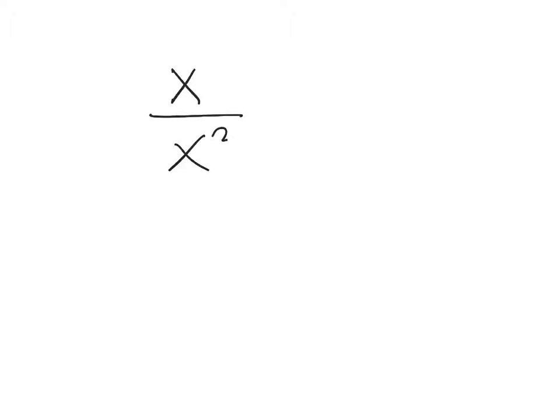Now let's look at some fractions with variables. I inserted two slides to show examples of simplifying fractions with variables before we get into polynomials. My first example is x over x squared. You can factor x squared and break it apart — x times x is x squared. Once it's factored, look for things in the top that match the bottom.